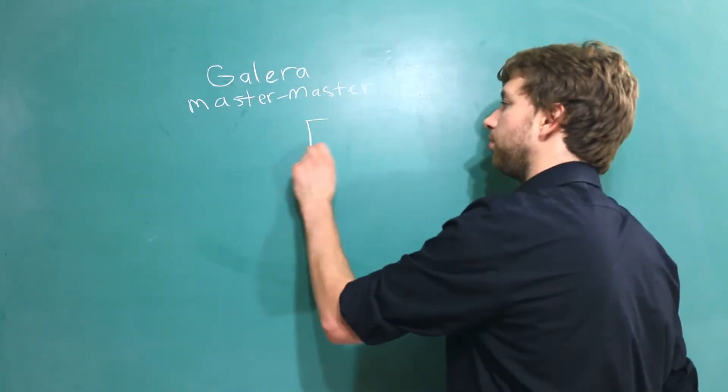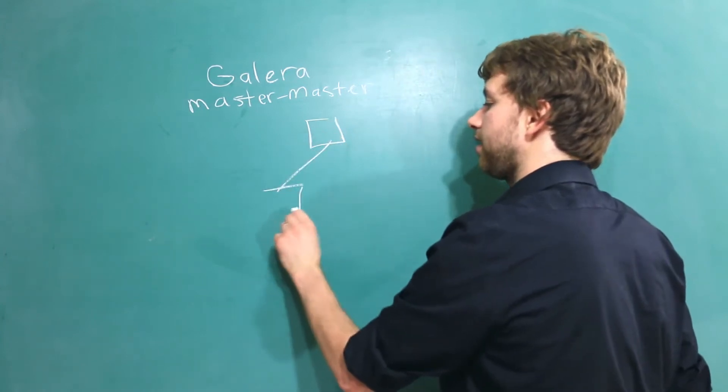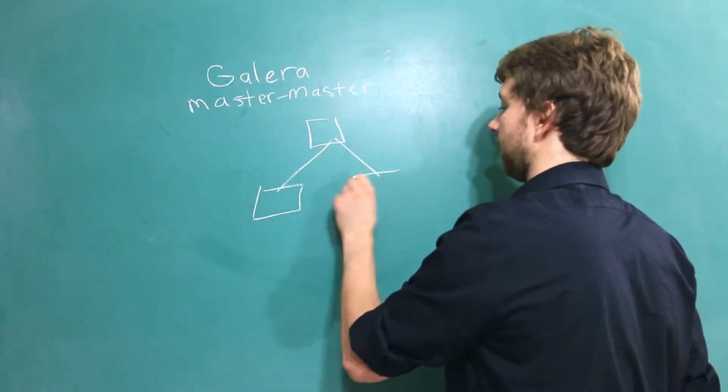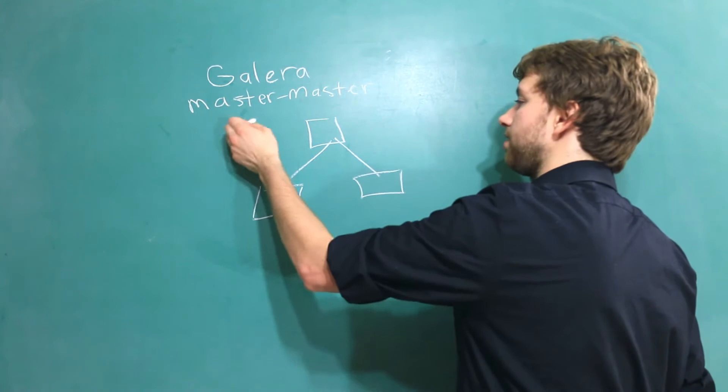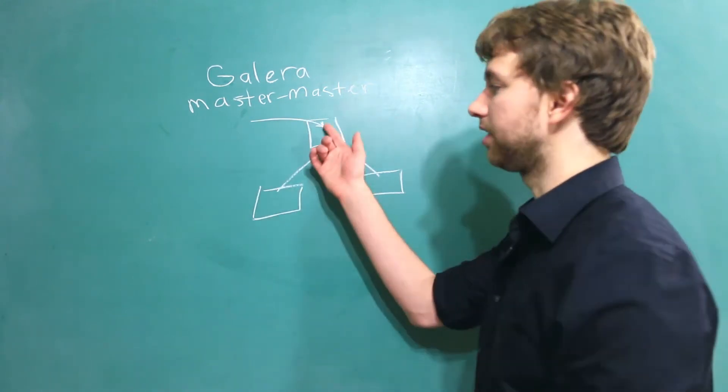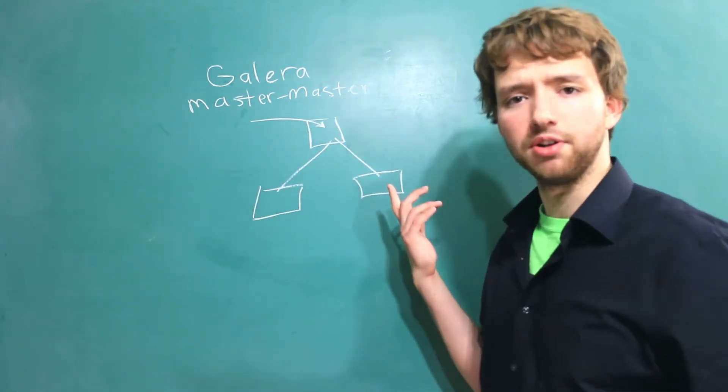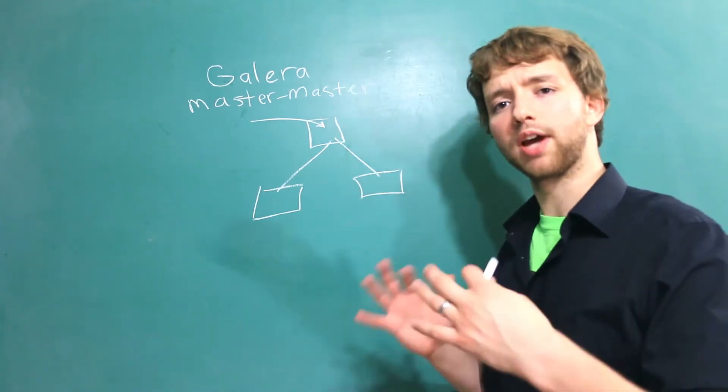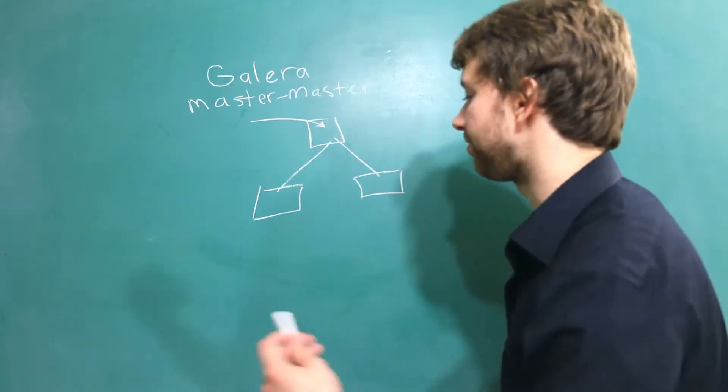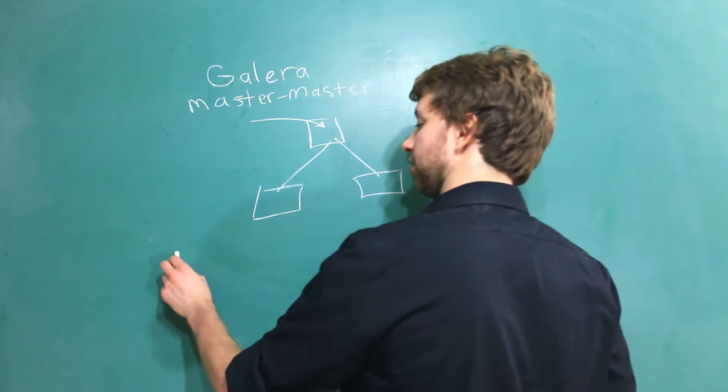So if you have multiple nodes obviously data is going to have to be transferred somehow because we write to this node well how exactly does that get replicated to these nodes and when does that happen? Well there's two real categories of how that happens and that is synchronous versus asynchronous.